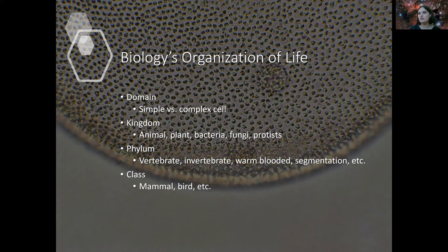So the first step is called domain. The first step of organizing all these different types of life forms is domain. Is it simple? Is it complex? The next step is kingdom. Is it an animal? Is it a plant? Is it a bacteria? Is it a fungi? Is it protus? So you're taking simple versus complex. The next step is phylum. Is it a vertebrate, invertebrate, warm-blooded, segmented, and so on.